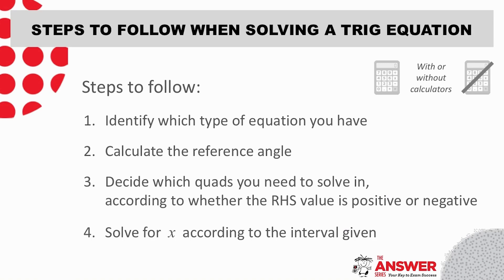So the steps to follow are first to identify the type of equation you have. Once you've identified the type, then next is to calculate the reference angle. Then once you've done this, you're left with deciding which quads to solve in and then simplifying and finding your solutions, giving your answers as required.